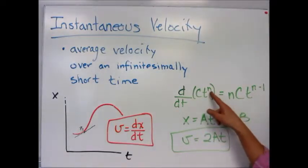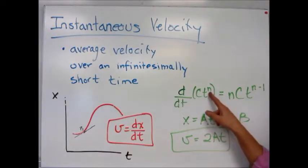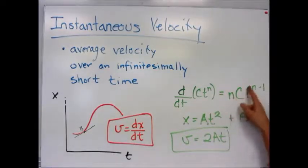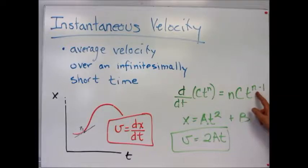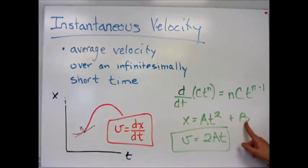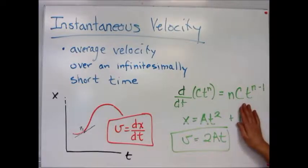You take your exponent on your variable, for us it will be t, and you multiply it by the number that's in front of your variable. So we have n times c, and then you subtract 1 from your exponent. For example, we have x equals at² plus b. Our first derivative would be 2at, and the b goes away because there's no time involved.